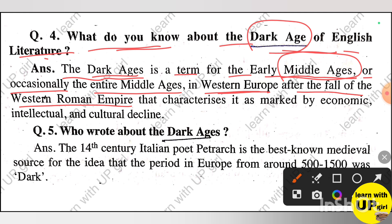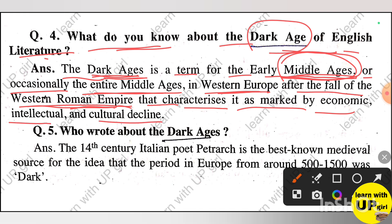The dark age refers to the period after the fall of the Western Roman Empire. It characterizes a time marked by economic, intellectual, and cultural decline following the collapse of the Western Roman Empire during the medieval period.